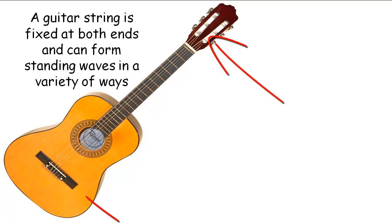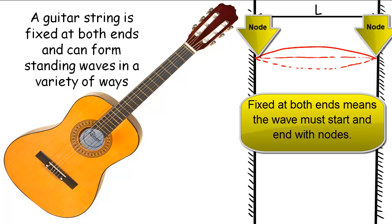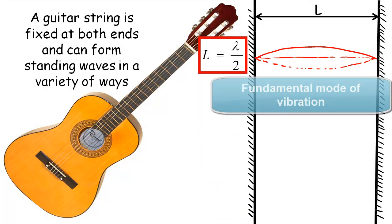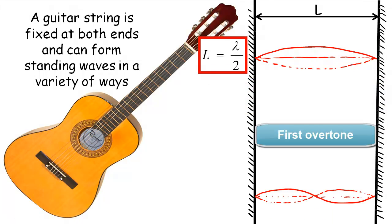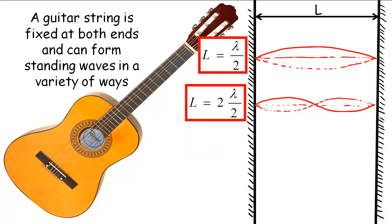Guitar strings are fixed at both ends and this limits the types of waves that can form, because you'd have to start with a node and end with a node. The lowest frequency to produce a standing wave will produce the fundamental mode of vibration, which is just half a wave long. The first overtone doubles the frequency and produces a wave equal to the length of the string. As you increase the frequency, you find more situations where standing waves occur, and these are named the first, second, third overtone and so on.